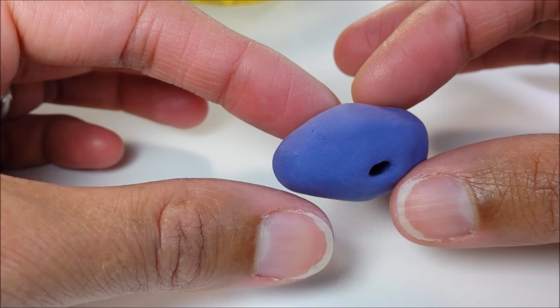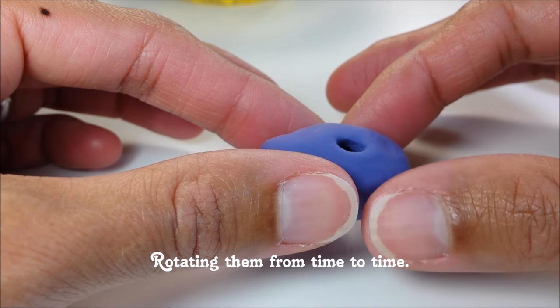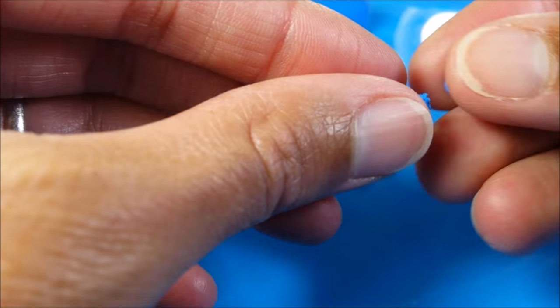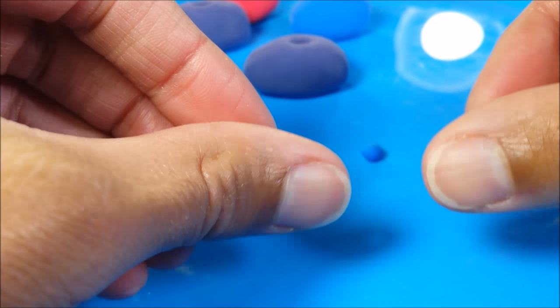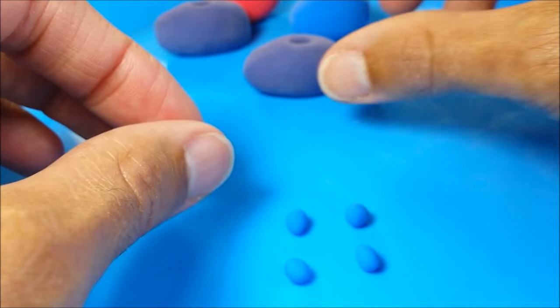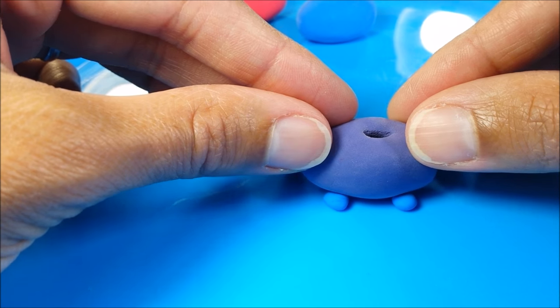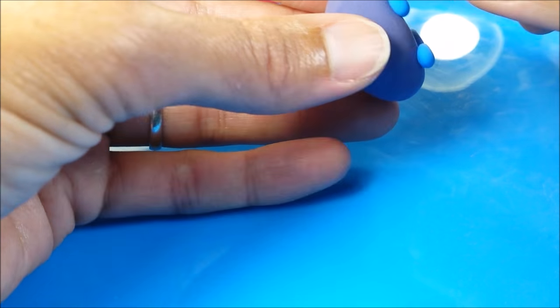Now you can leave it to dry and I just place mine in front of the fan to speed up that drying process. When your pigs are dry, for the legs I roll out more model magic, just four little balls. I place my pig on top and adjust as needed.